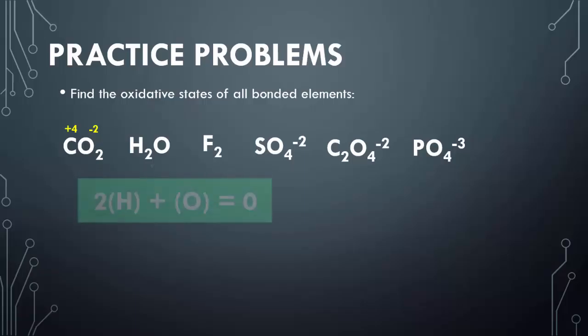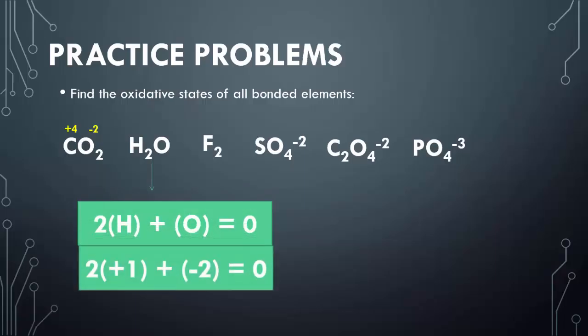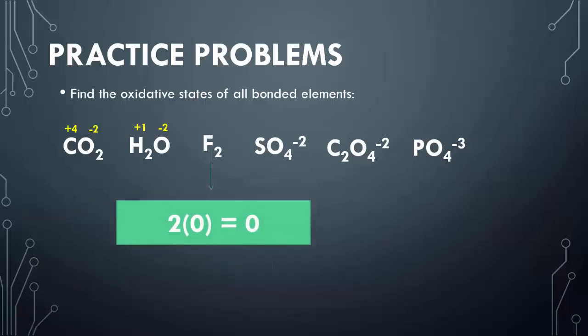Looking at water, you have two hydrogens and one oxygen — again, neutral. The hydrogens have a positive one charge, and oxygen still has that negative two charge. When you look at diatomic fluorine, F2, you've got to know it's neutral — it's a diatomic element, not a bond. The math shows why it has to be zero, so you give it a charge of zero.